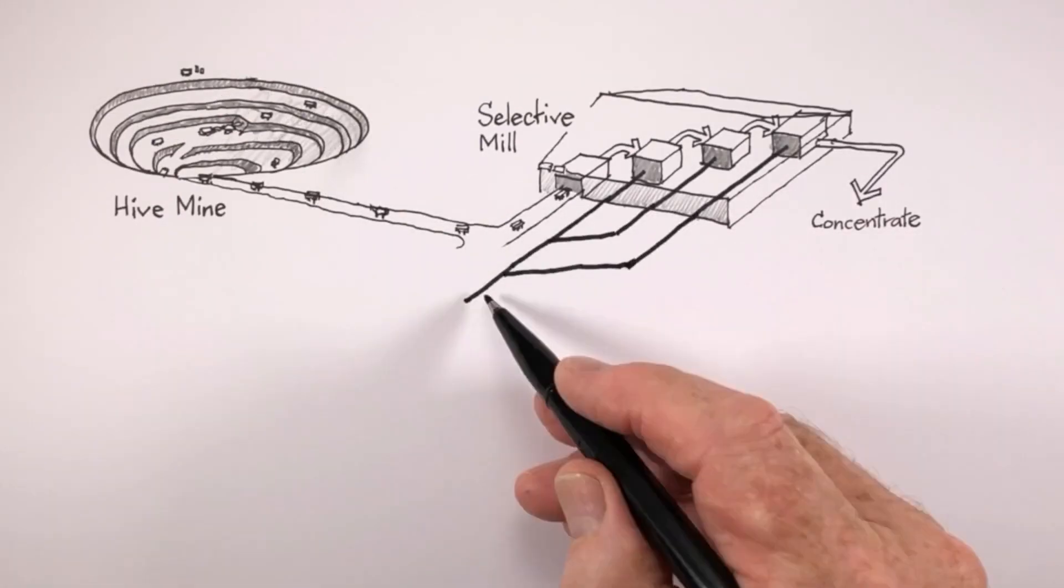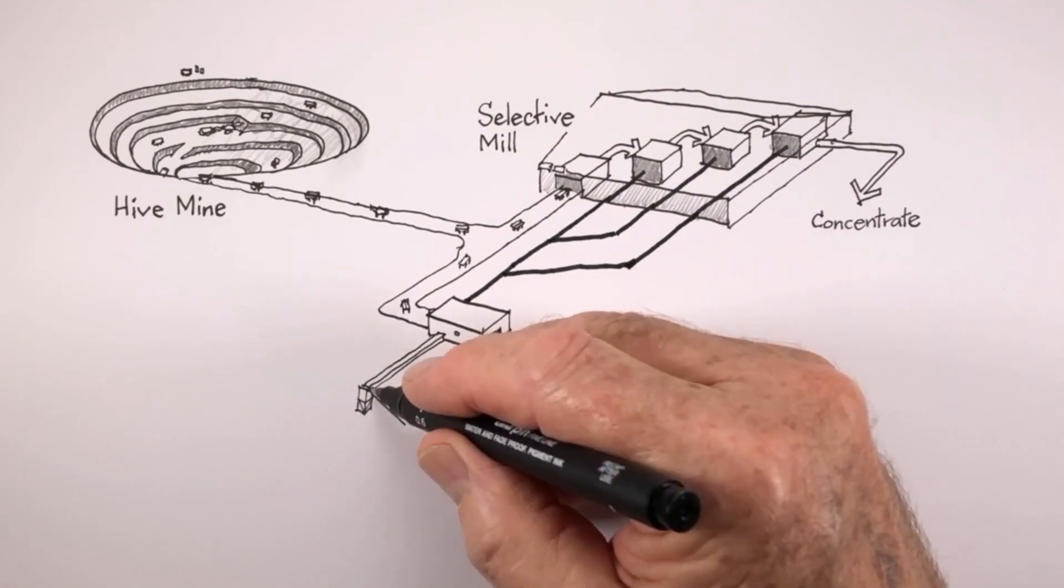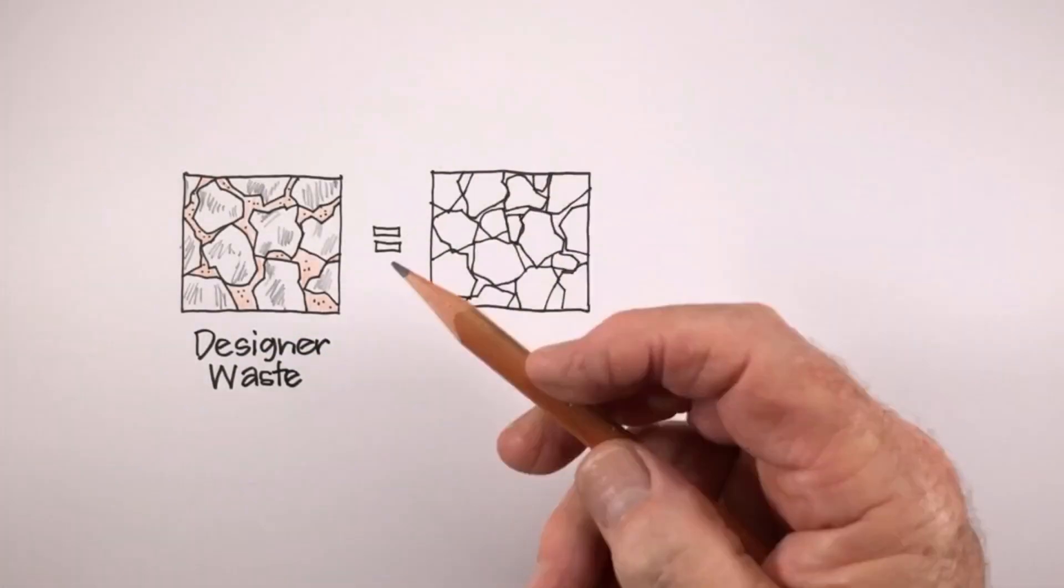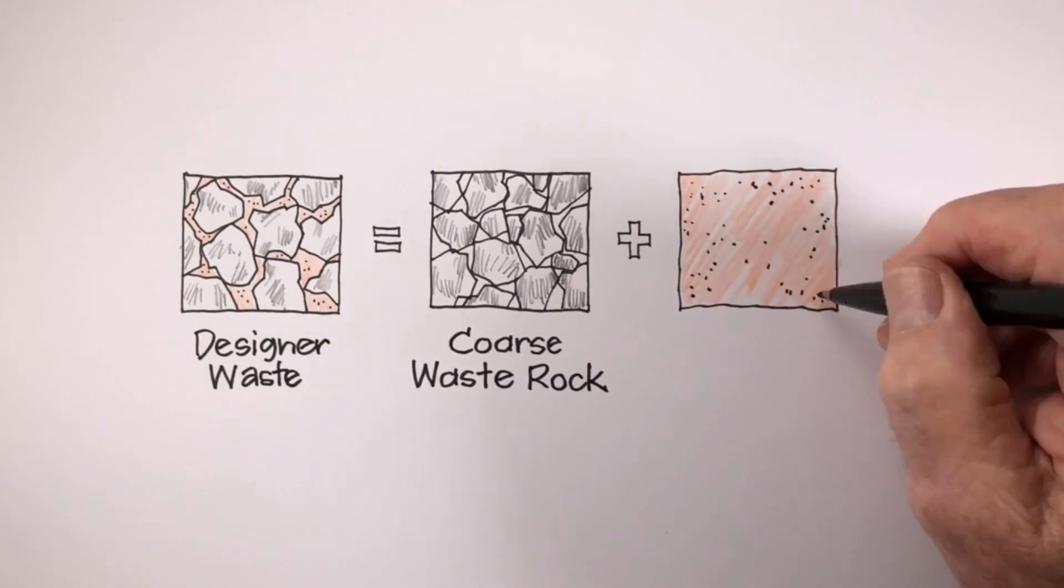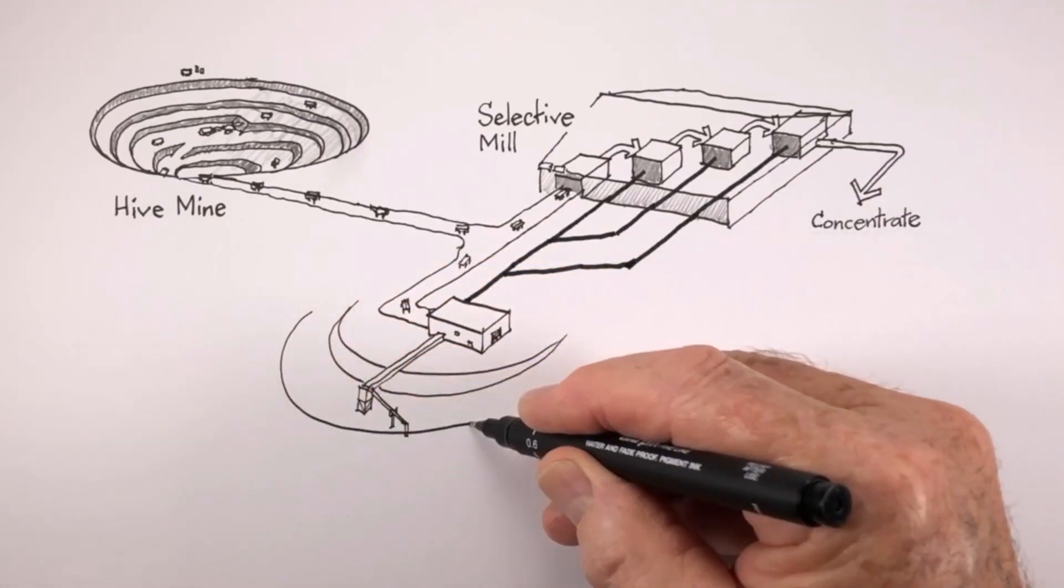The separated waste material is then managed to create a designer waste stream. Designer waste is the smart combining of coarse waste rock with dewatered tailings to create safe and stable landforms.